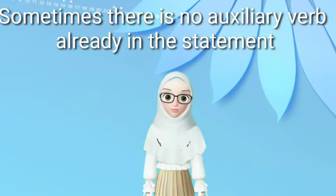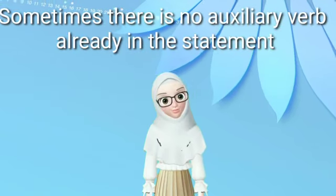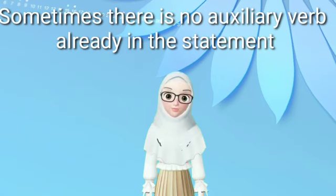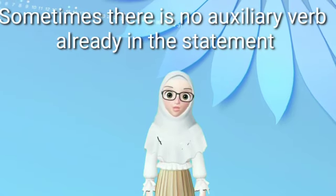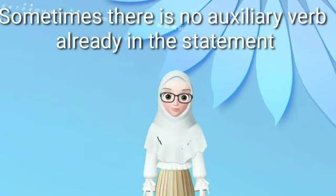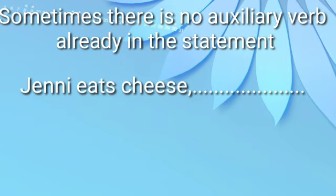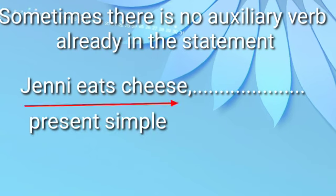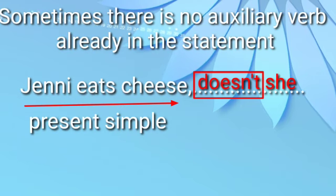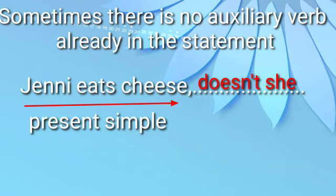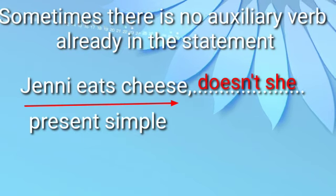Sometimes there is no auxiliary verb in the statement. If the verb in the statement is present simple or past simple and positive, we use 'do', 'doesn't', or 'didn't'. For example: 'Jenny eats cheese' — there is no auxiliary verb in the statement, the statement is present simple and positive, so we use 'doesn't' for the question tag. Jika statement tidak ada auxiliary verb dan statement present simple positive, kita gunakan 'don't' atau 'doesn't'.